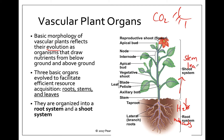The shoot system has the stems and leaves, and the root system is made up of the roots. Stems and leaves can both be green and photosynthetic, but a root system is never going to have chlorophyll and is never going to be photosynthetic, because it's meant to grow underground.